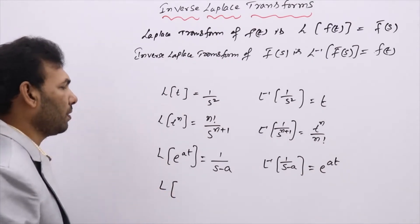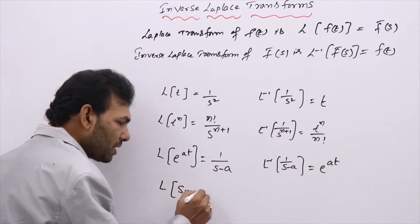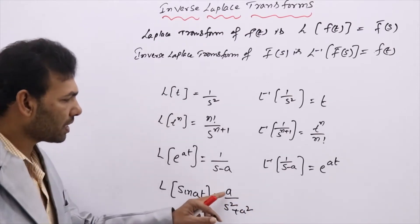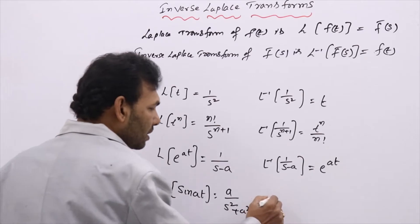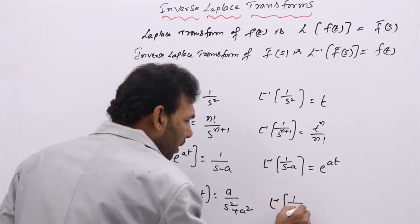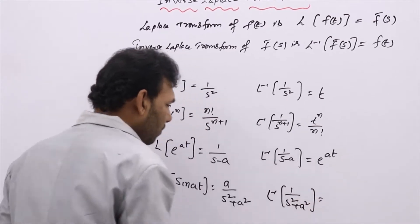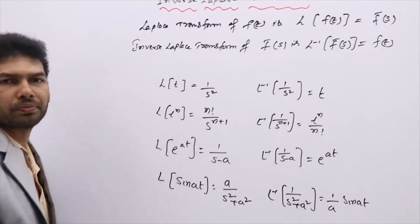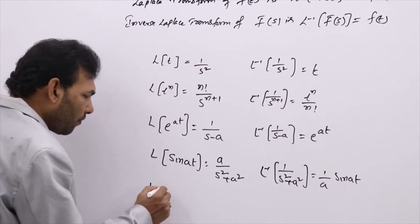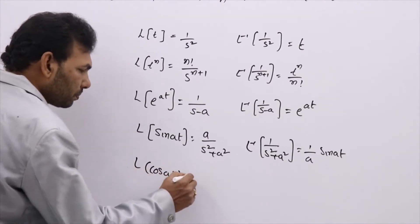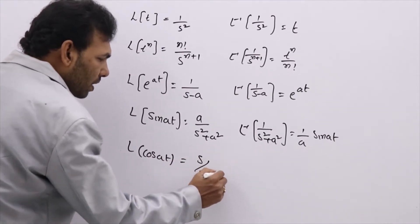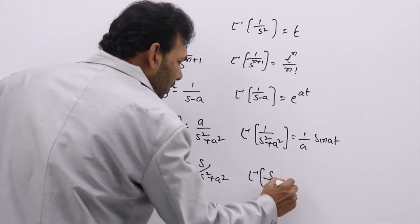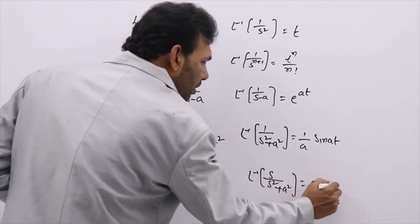L of sin at we know — it is a by s square plus a square. You can send the constant to this side, so L inverse of 1 by s square plus a square gives sin at. L of cos at we know — it is s by s square plus a square — so L inverse of s by s square plus a square equals cos at.